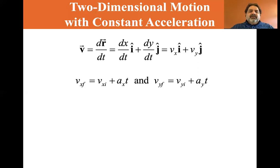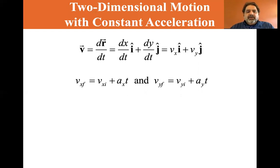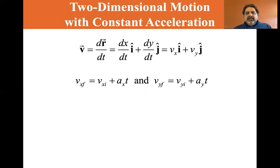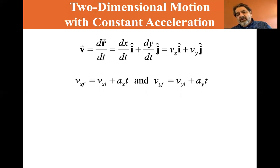vx final, if you recall from chapter two the equations of motion, equals vx initial plus ax times t. That's the equation: vx final equals v initial plus at. And we also have vy final equals vy initial plus acceleration in the y direction times t.